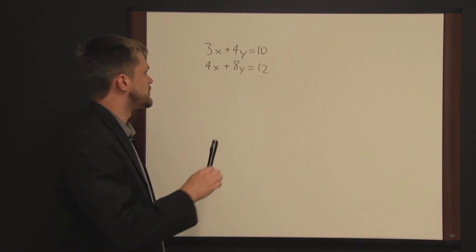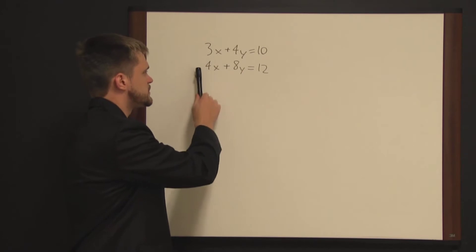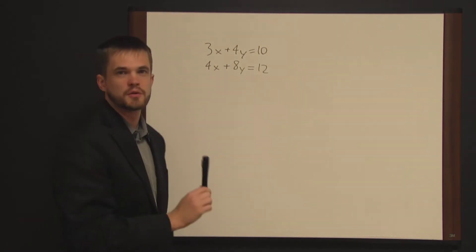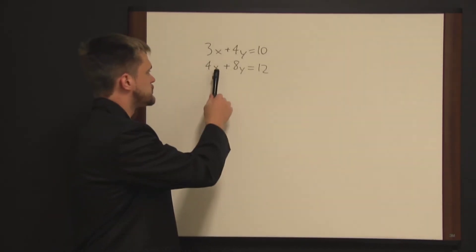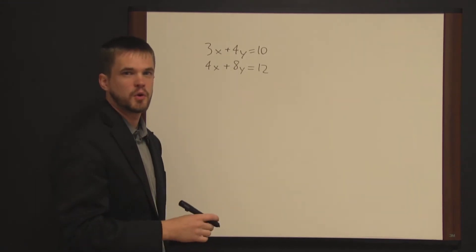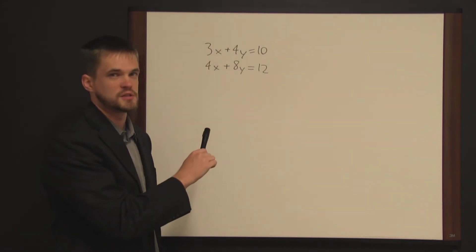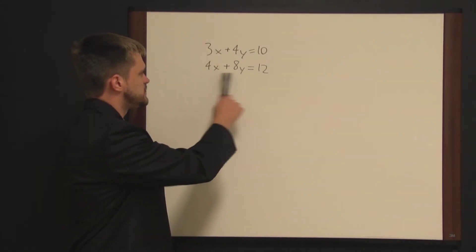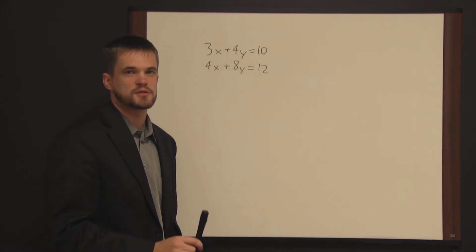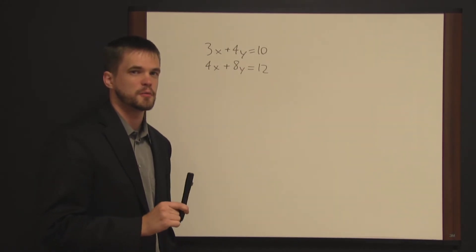The general rule is that with systems of equations, if you have the same number of equations as you have variables, you can solve for values for the variables. You'll recall with a single two variable equation, we couldn't solve for values for x and y, we could only solve for those variables in terms of the other variable. So with a system of equations, if we have the same number of equations as variables, generally we can solve for values for those variables.